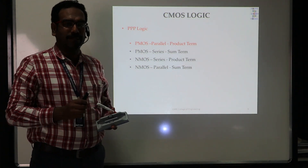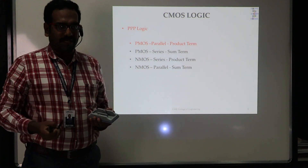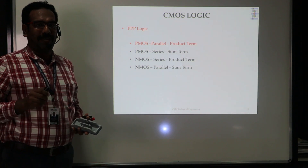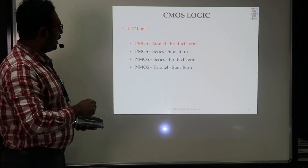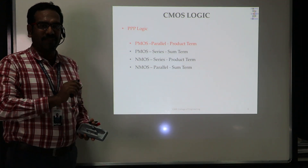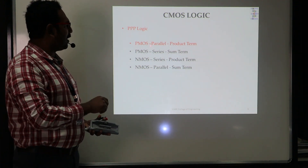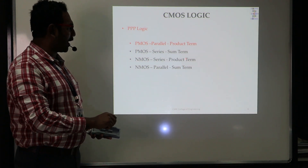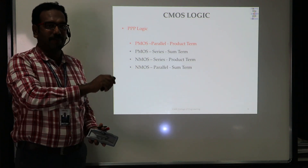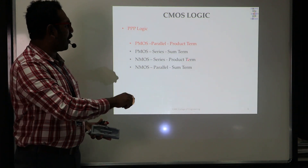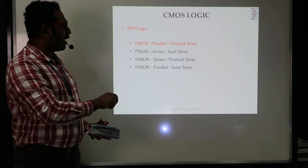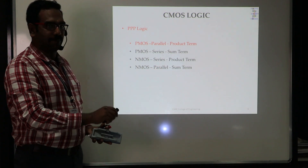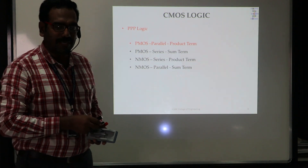Now we have discussed implementing a simple CMOS inverter. Next we will see how to implement complex digital circuits with CMOS transistors. For that, I am going to use a simple logic called PPP logic — triple P logic. The first principle: PMOS transistors are in parallel for product terms. PMOS transistors are in series for sum terms. NMOS transistors are in series for product terms. NMOS transistors are in parallel for sum terms. Using these four principles of triple P logic, we can design any CMOS digital circuit.